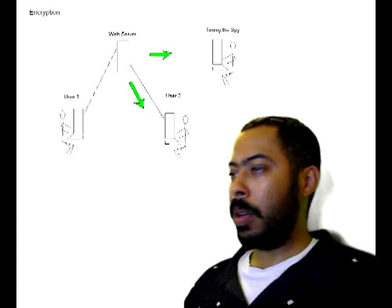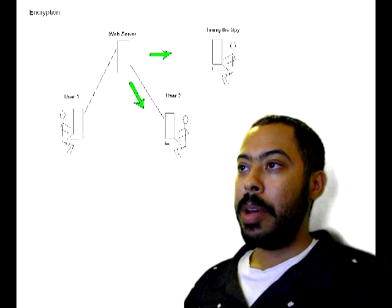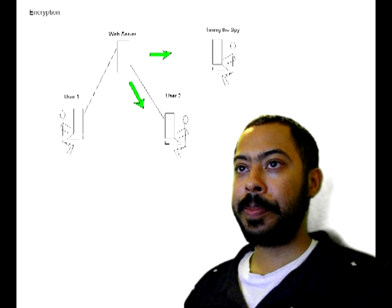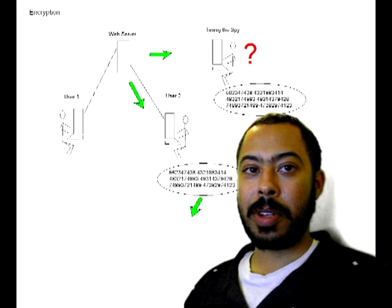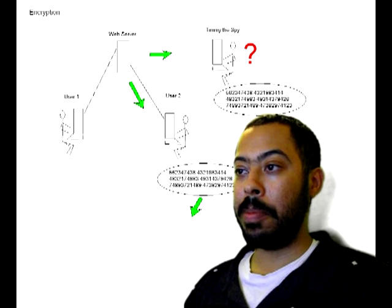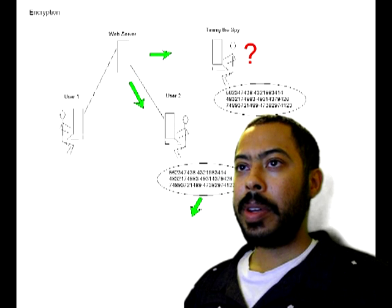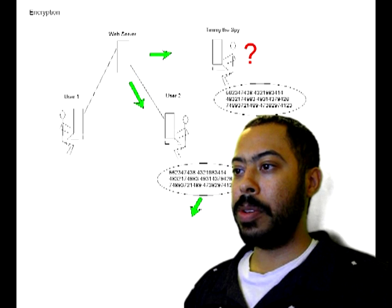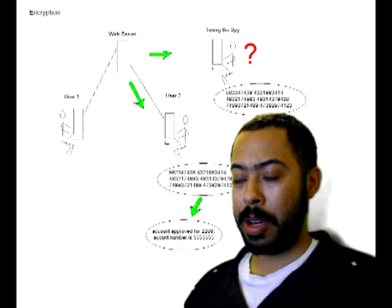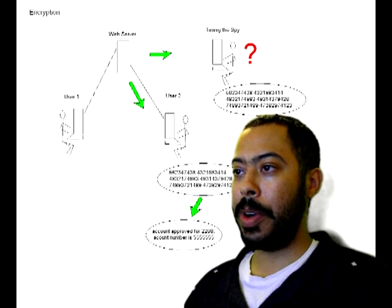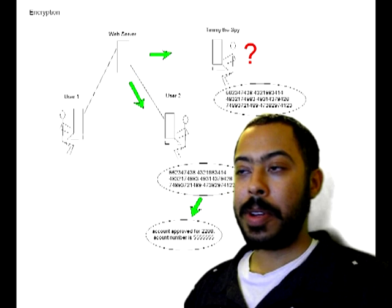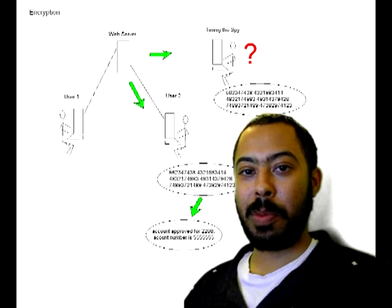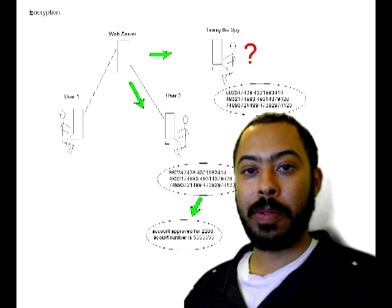User 2 and Timmy the spy both download the new message. Only now, Timmy the spy gets the garbled numbers and has no idea what they mean, because he is not privileged to the key used to decrypt the message. User 2, however, knows exactly what to do — he and User 1 worked out the key system together, so he can translate the garbled numbers back to the original message. This is the basic concept of encryption.